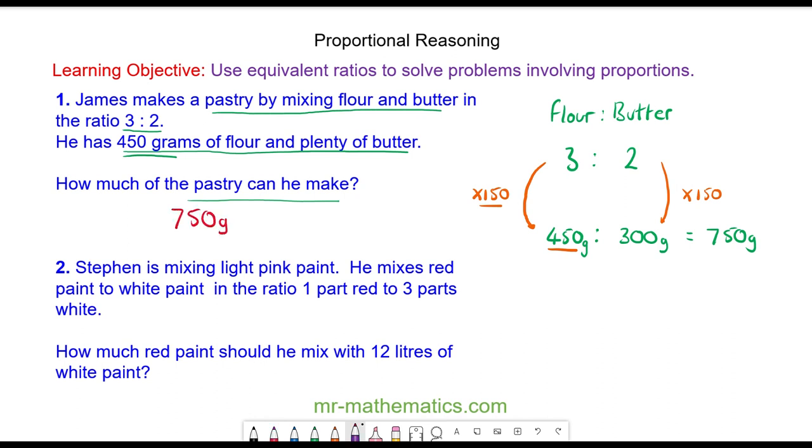For question two we're told Stephen is mixing light pink paint. He mixes red paint and white paint in the ratio one part of red to three parts of white. We can write this as a ratio, we have red to white, and for every one part of red he has three parts white.